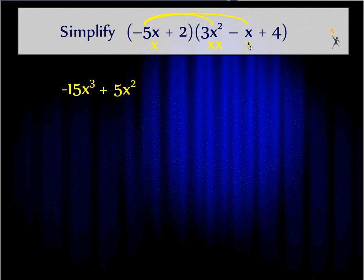Next, negative 5x gets to be distributed to the negative x. Negative times a negative is a positive. 5 times 1 is 5. And x times x is x squared. Next, I have to multiply it to the positive 4. Negative times a positive is a negative. 5 times 4 is 20. And there's only one x involved so it just gets brought down.